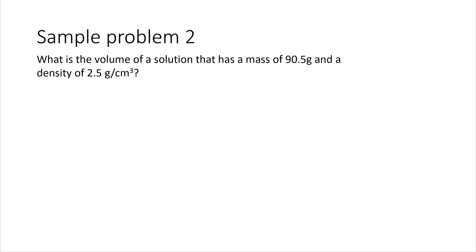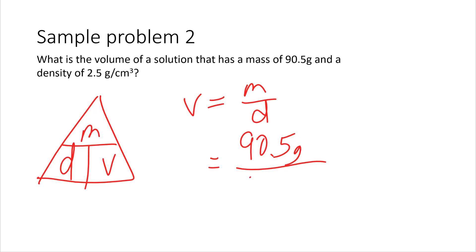Okay. Number two. This problem says, what is the volume of a solution that has a mass of 90.5 grams and a density of 2.5 grams per centimeter cubed? So, we draw our triangle to help us remember what the equation is. And, we cover up V, so it's M divided by D. So, we write the equation. Then, we put 90.5 grams on the top, and 2.5 grams per centimeter cubed on the bottom.